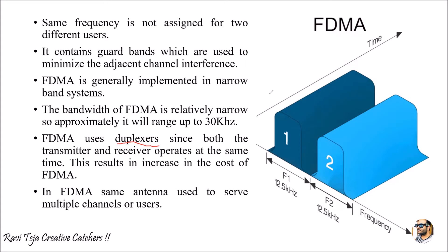Since both the transmitter and receiver need to operate at the same time using a duplexer switch, this results in an increase in cost. So implementing FDMA with duplexers increases the overall cost. However, the same single antenna is used to serve multiple channels or users — for example, with 10 users, we don't need 10 different antennas; a single antenna serves all multiple channels.